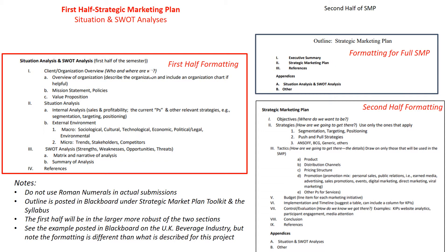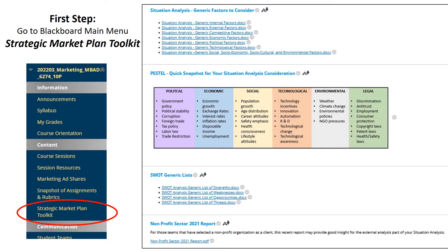This outline is posted in Blackboard under the Strategic Marketing Plan Toolkit and also in the syllabus. You might find it helpful to look at the UK Beverage Industries Strategic Marketing Plan that is also posted in Blackboard, but please note that the formatting is slightly different than what is recommended for this Strategic Marketing Plan. The first step is to make sure you are familiar with all of the resources provided in the Strategic Marketing Plan Toolkit posted on Blackboard.